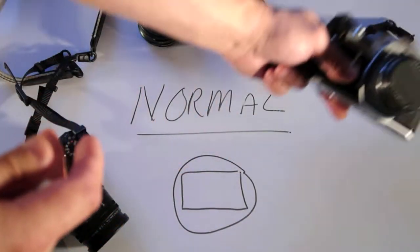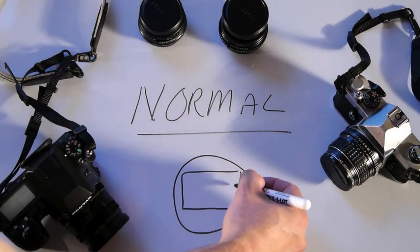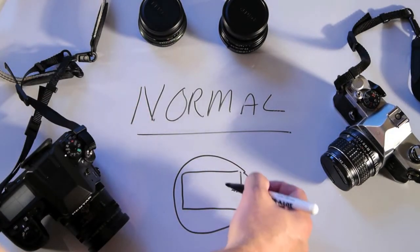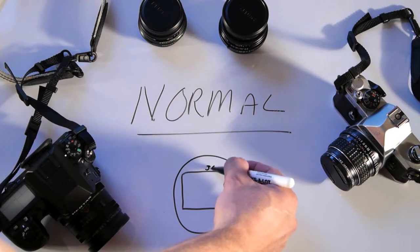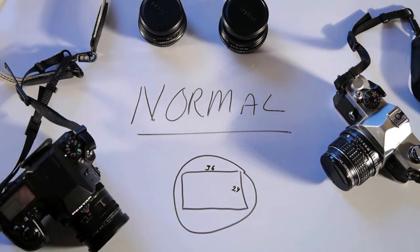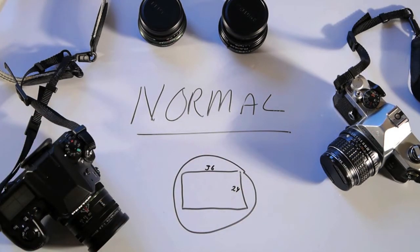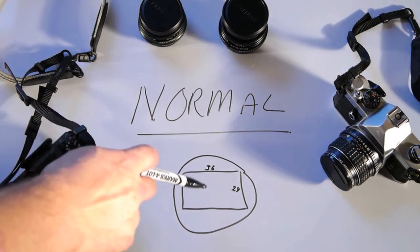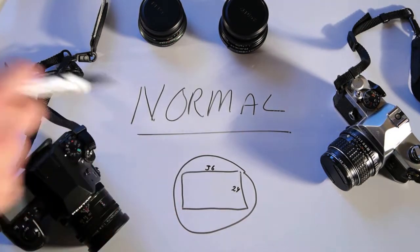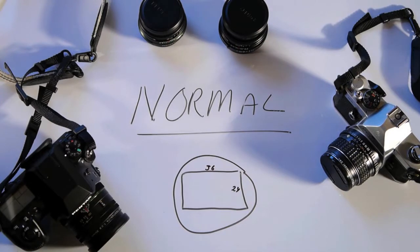Alright, so, the full frame film was 24mm by 36mm and somehow they got the name 35mm out of that. And a normal field of view on that frame was 50mm.